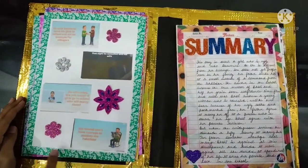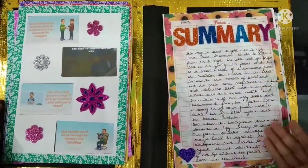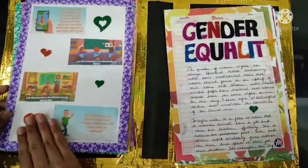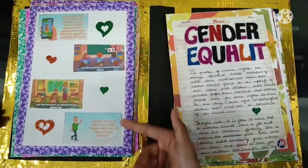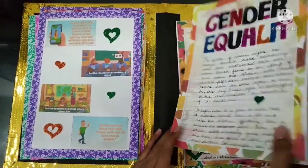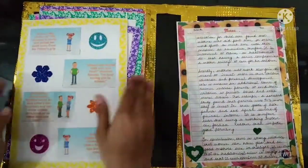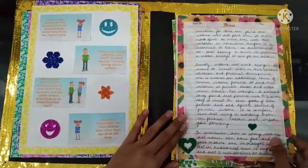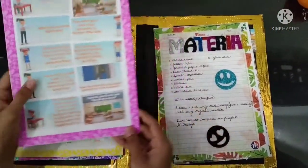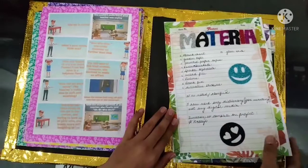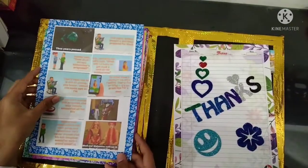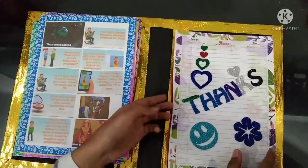Later in the story, circumstances arise where Bholi has to give acceptance to a marriage with an unequal match, but she rejects it when she sees her father yielding to the bridegroom who demands dowry. The story shows the rise of a girl against social injustice.